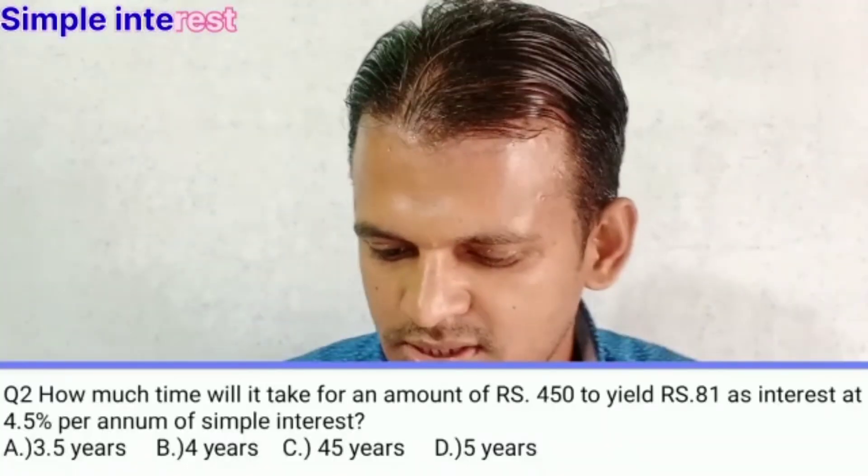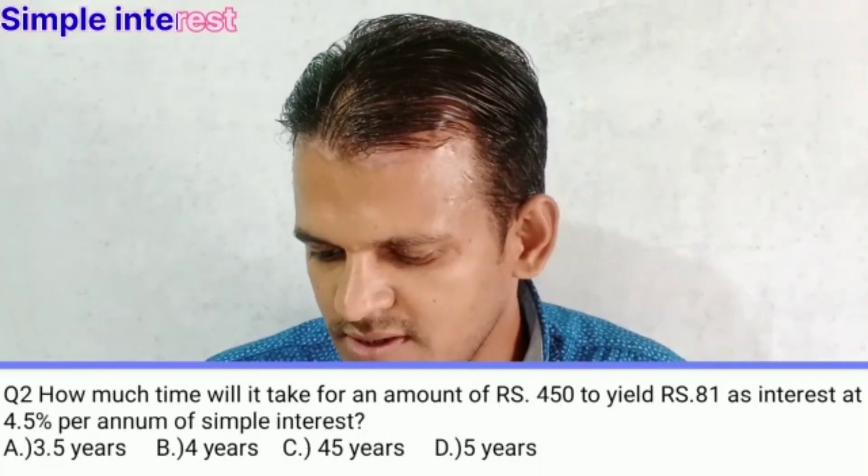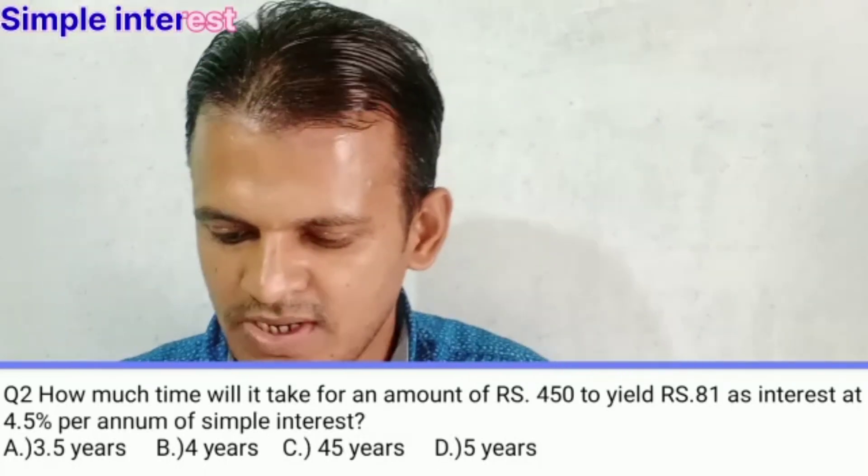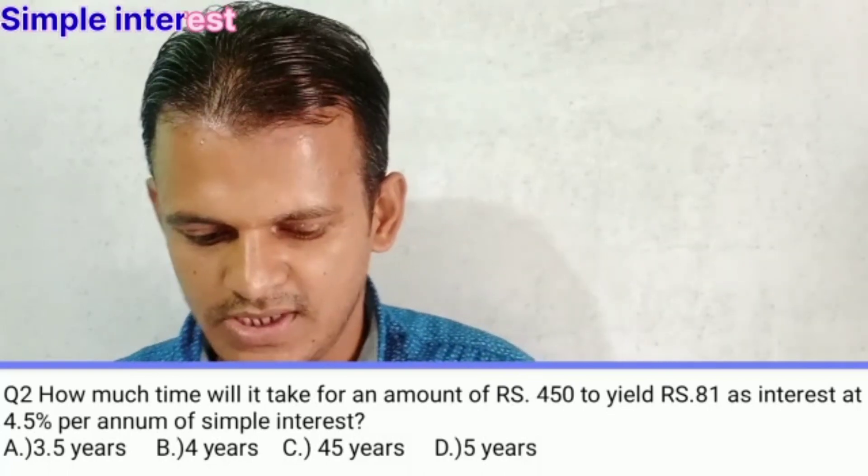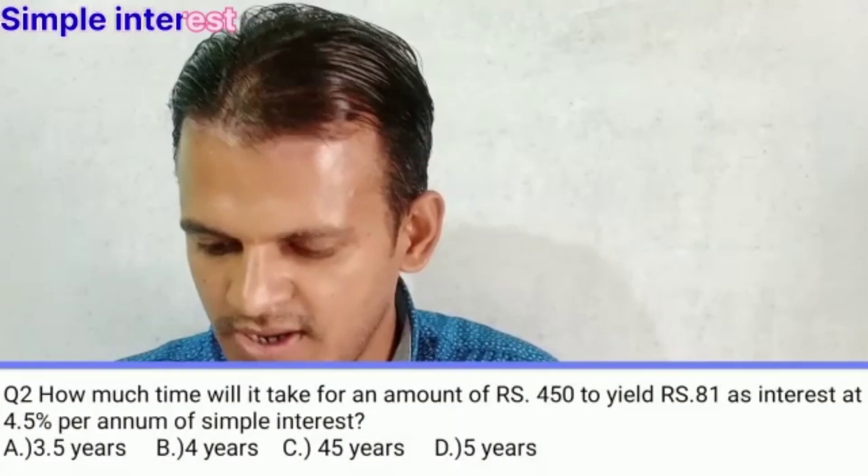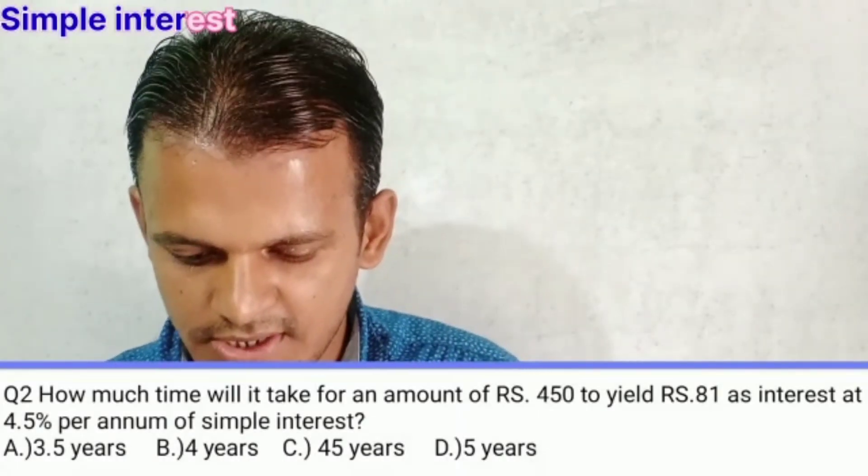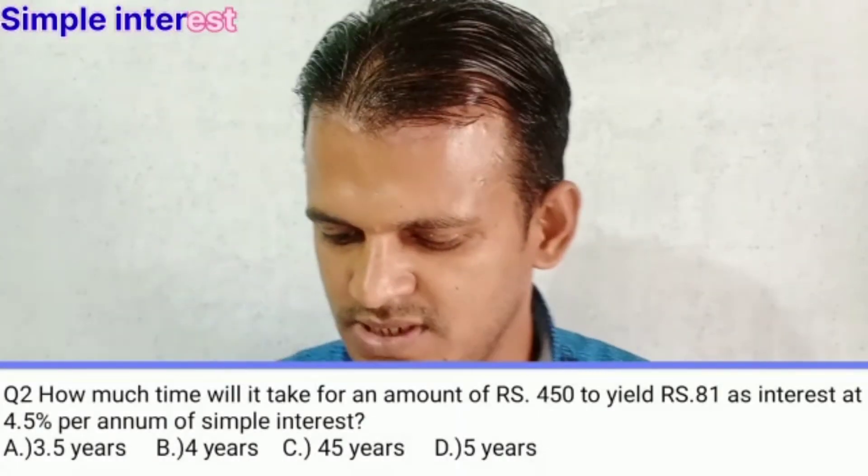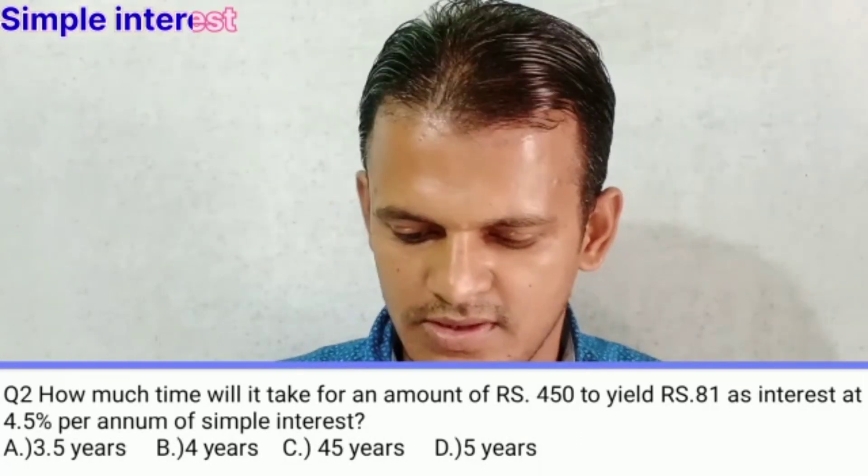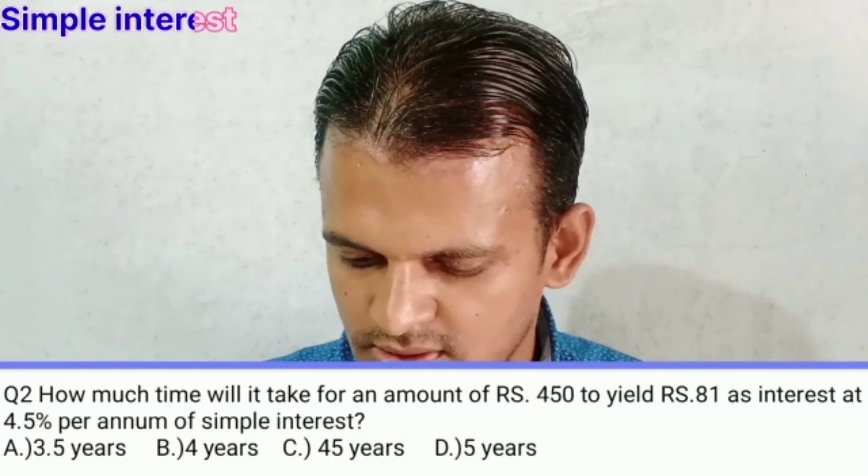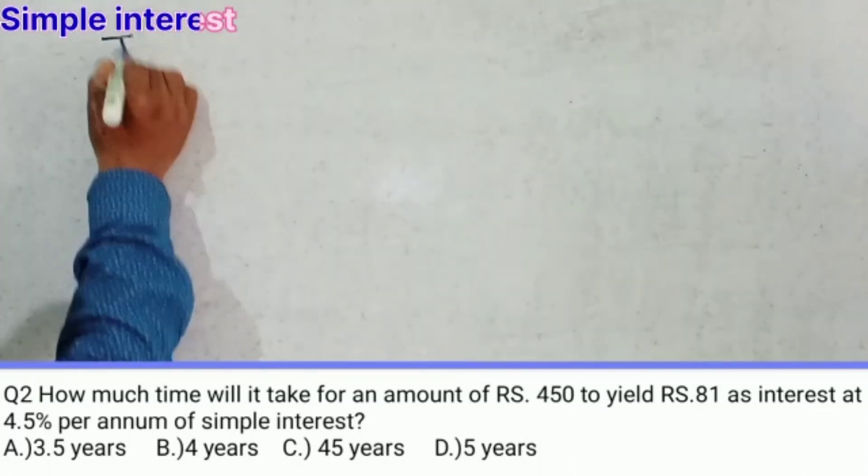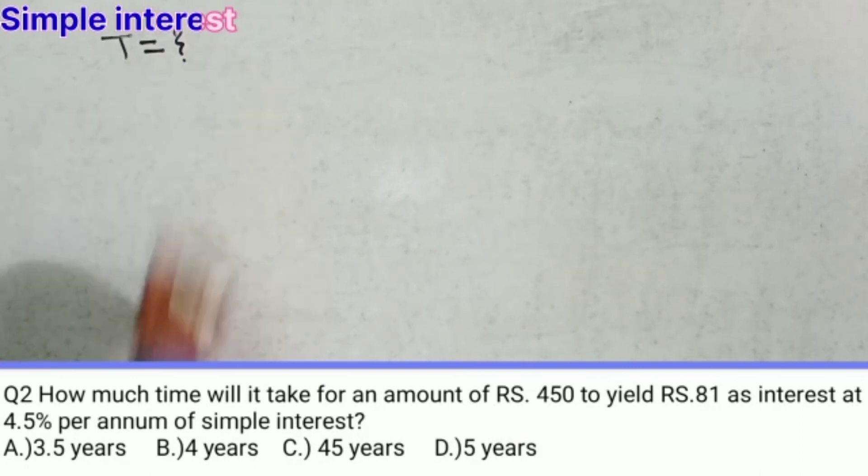Question number 2 is: how much time will it take for an amount of rupees 450 to yield rupees 81 as interest at 4.5% per annum of simple interest? This question is asking about time. So time is not given. Right?